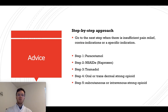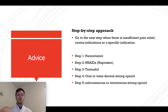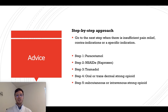Step 4 is oral or transdermal strong opioids, which includes fentanyl as well as oxycontin. The last step, step 5, is subcutaneous or intravenous strong opioids, mostly morphine in the hospital setting. For oncological pain, you may start directly at step 4 or 5 because it requires a high amount of painkillers.